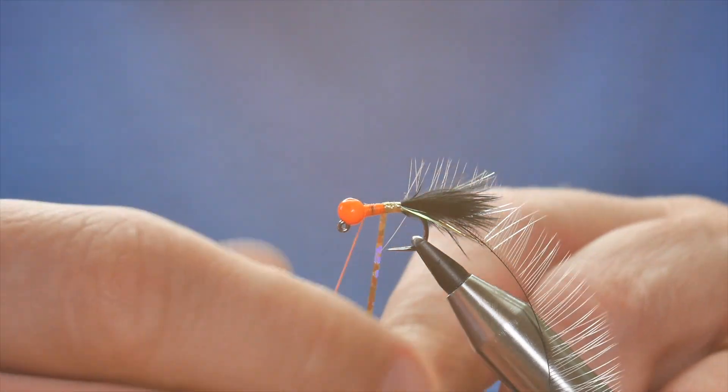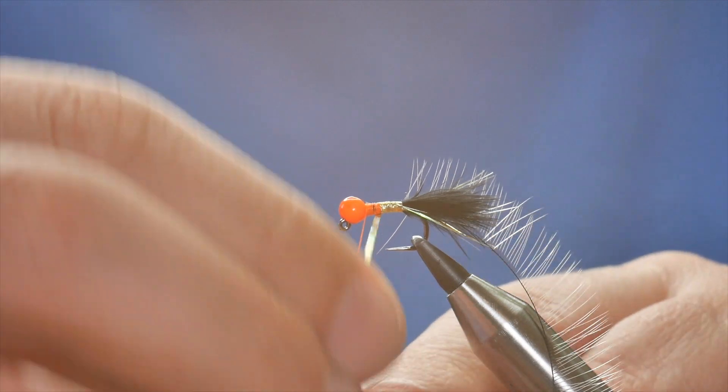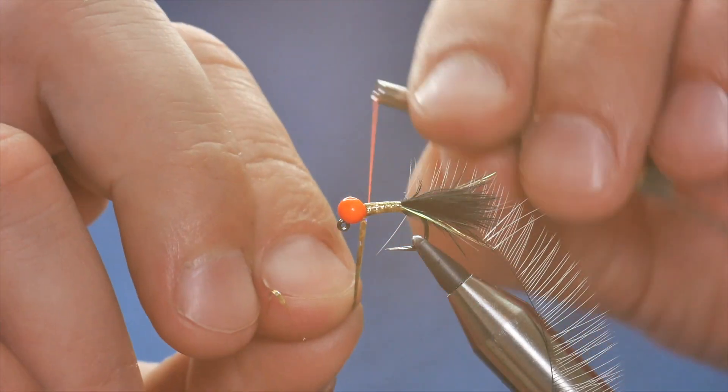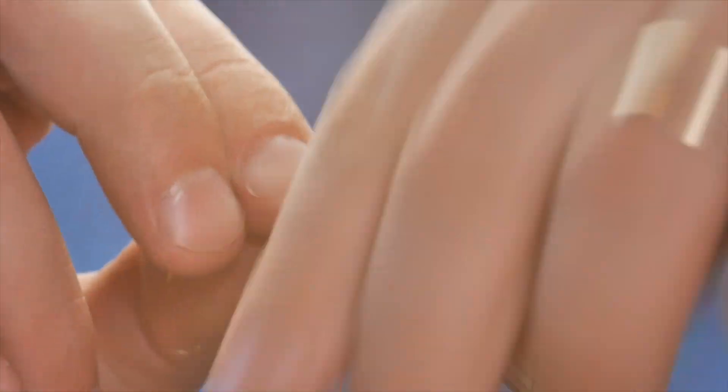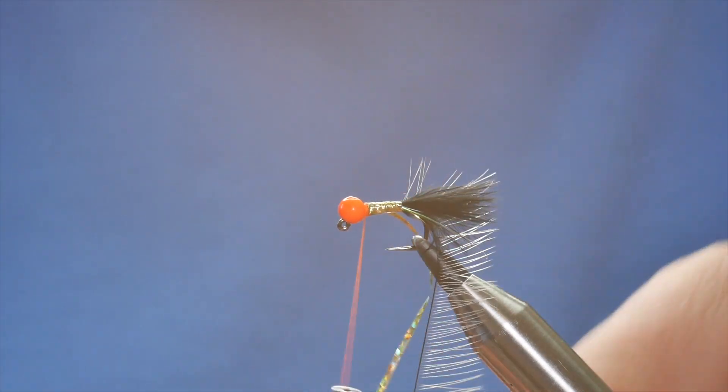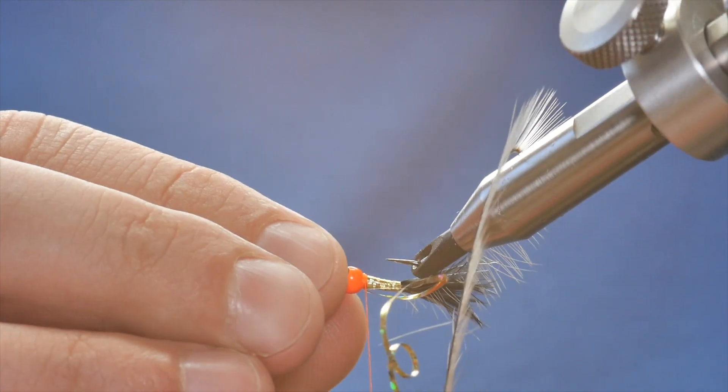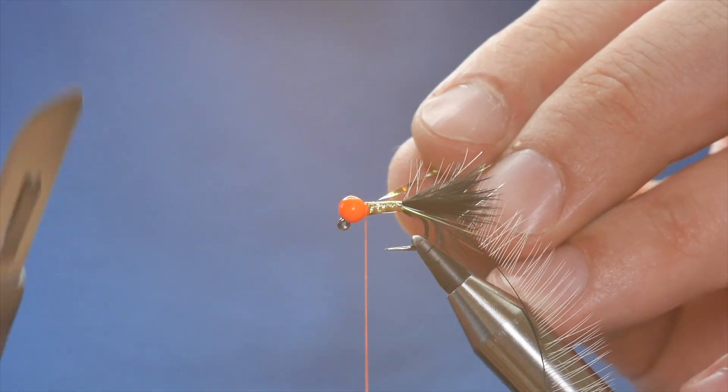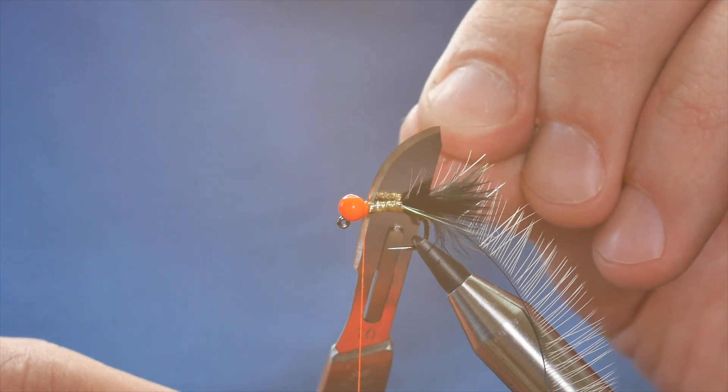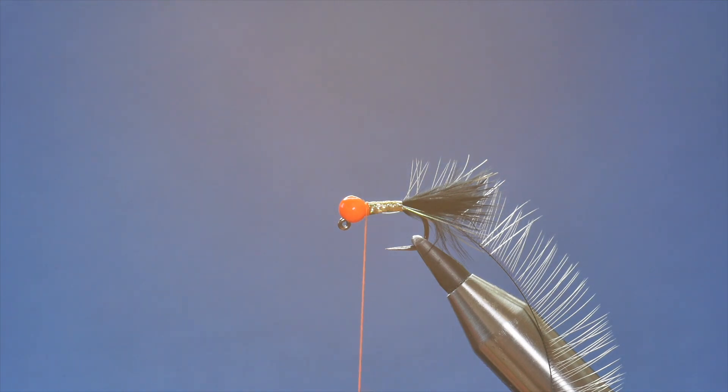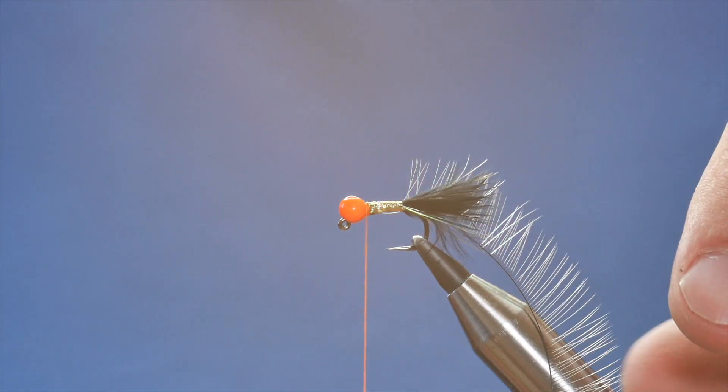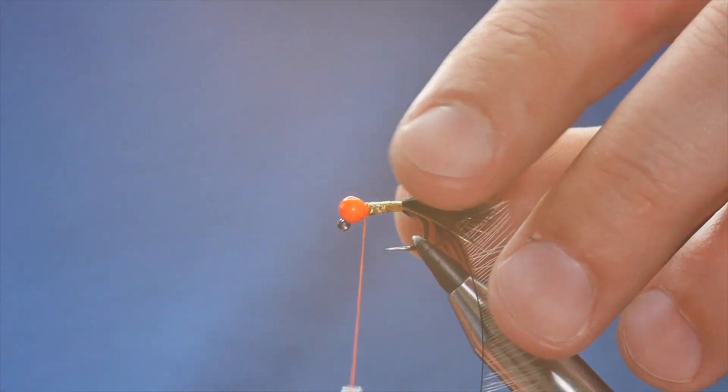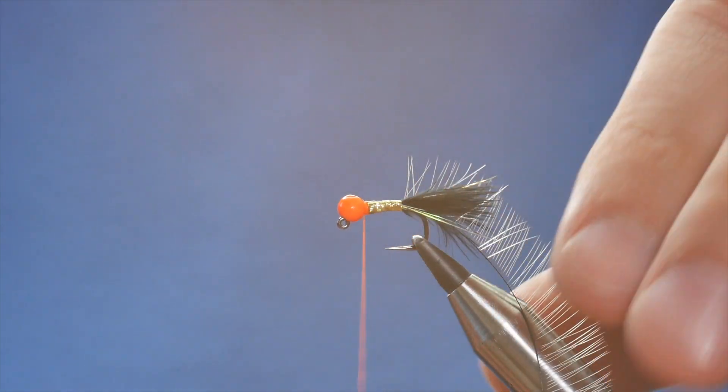And then I'm going to simply wind on my gold underbody. Now, once I've come up to the top, I will check that I have covered all the orange. You want to make sure you've covered the lot. So I'll put just a couple of turns in there and a turn in behind to lock it in place. And if I loosen my vise, I can just check that I've covered that body. I'm going to remove the gold with my scalpel here.